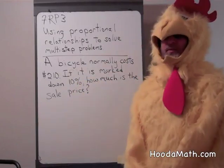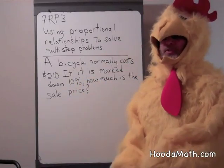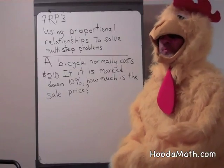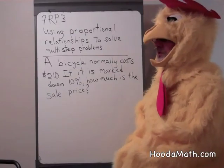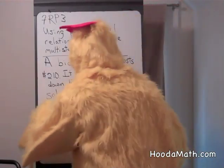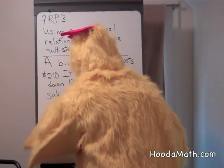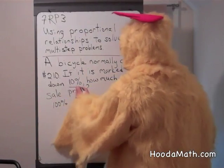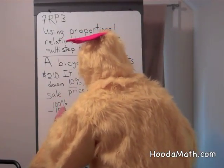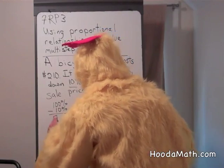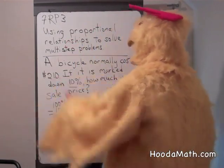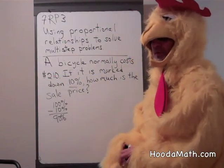When we mark something down, the price becomes smaller. We normally pay for the whole price — the normal price — which is 100% of the price. When we mark it down 10%, that means we subtract 10%, which gives us 90%. So we're going to pay 90% of the $210 to purchase the bike.